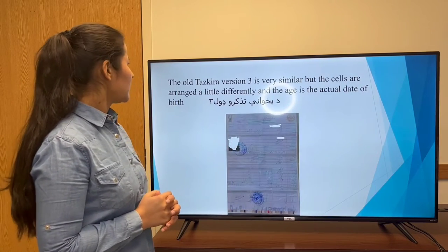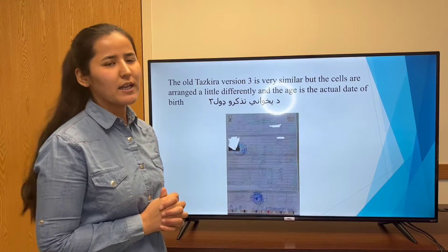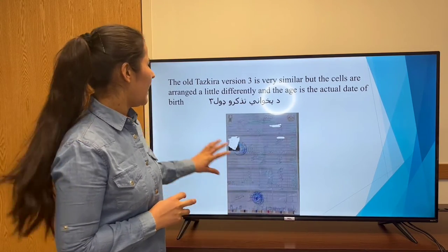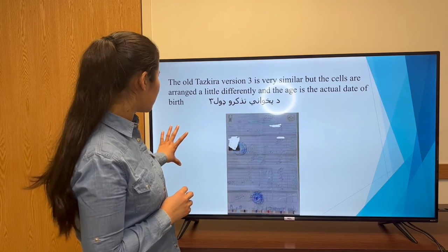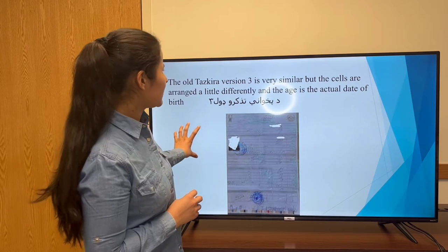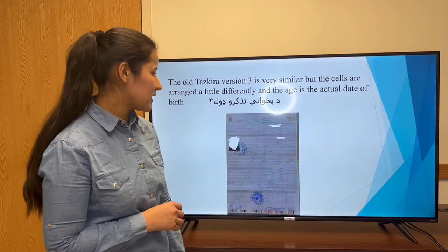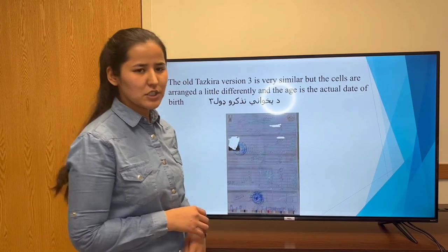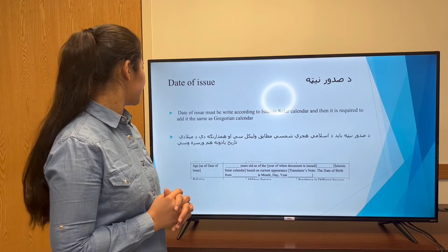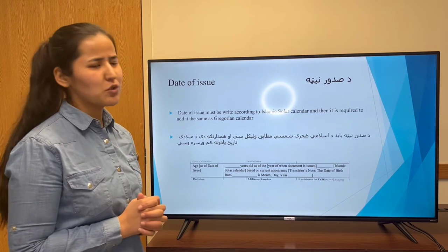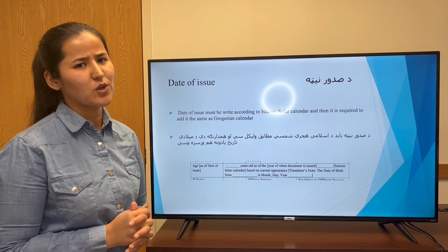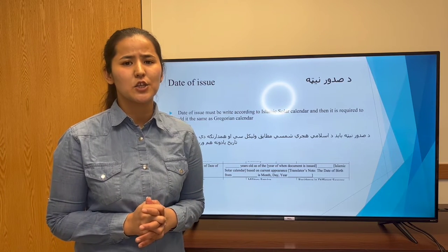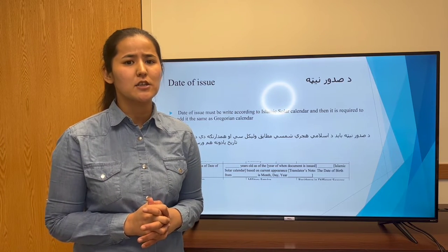The whole TASKRA version 3 is similar to old TASKRA version 2, but it has a different date of issue. The date of issue must be written according to the Islamic Solar calendar, but the translator should add the Gregorian calendar as well.